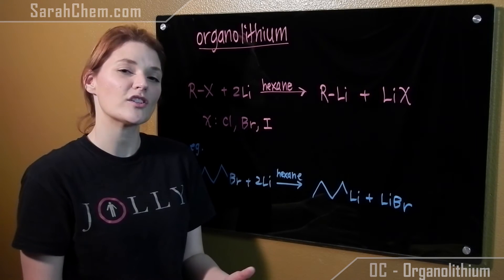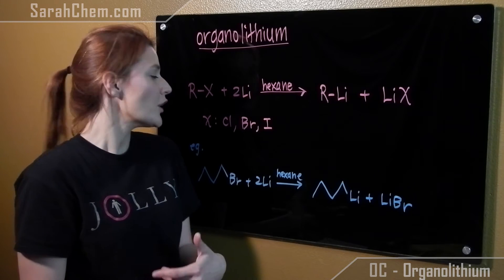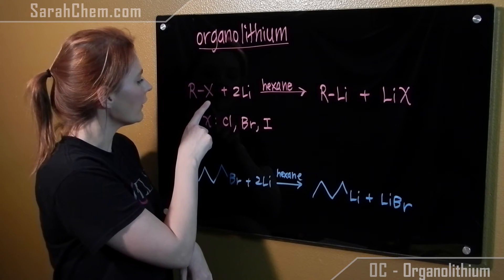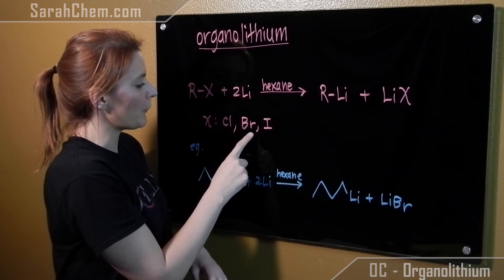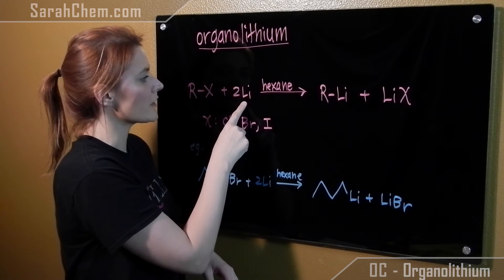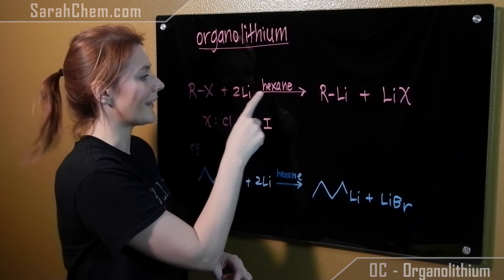In this video, I just want to look at the preparation of an organolithium. So what we do is take an alkyl halide, where the halide is either chloride, bromide, or iodide, and we react with two equivalents of lithium in a nonpolar solvent like hexane.